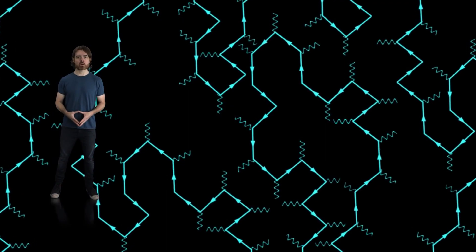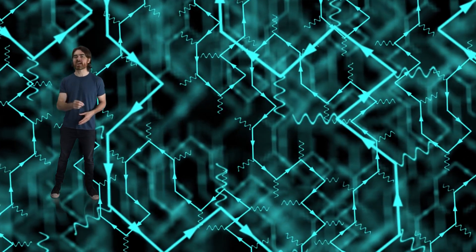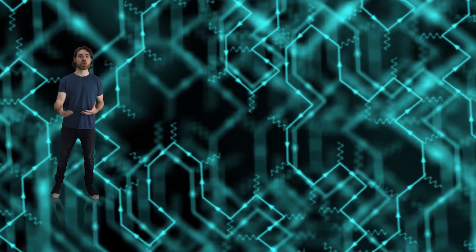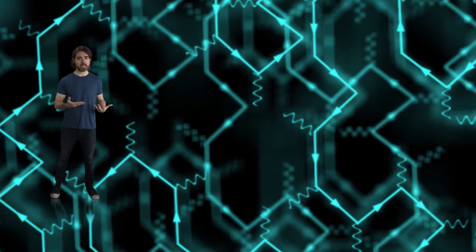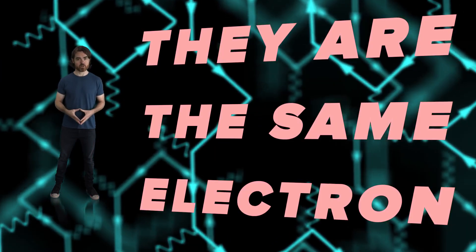If we draw a Feynman diagram for the whole universe, we can have only one electron undergo countless scattering events, some of which change its course through time. At some point in the middle of the diagram, we see many, many electrons. Wheeler's idea was that they are the same electron.